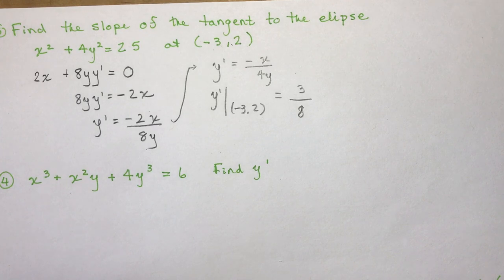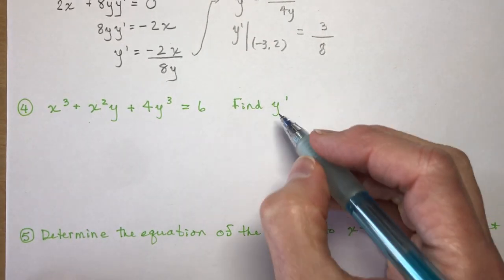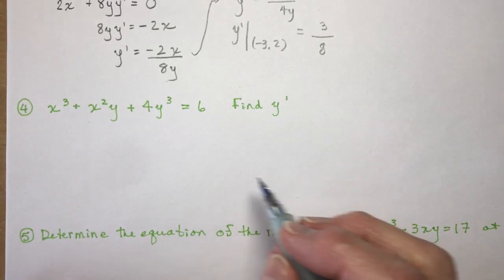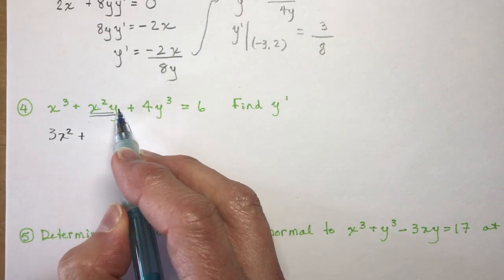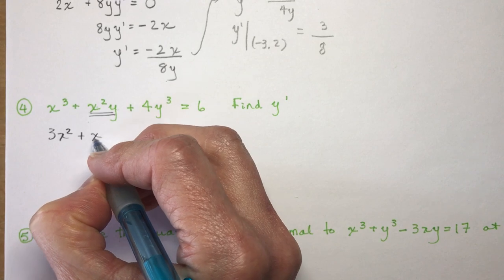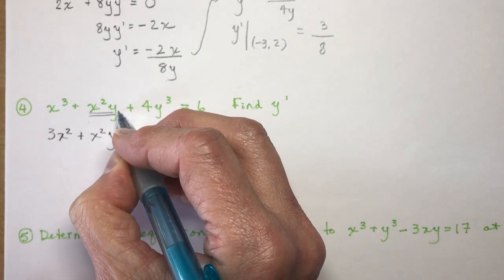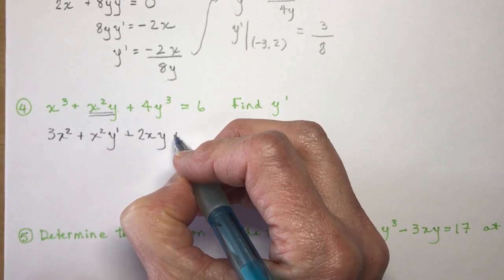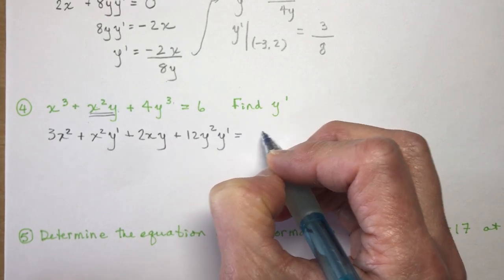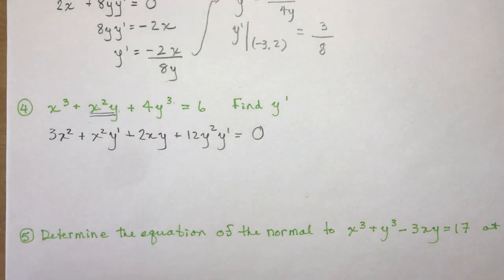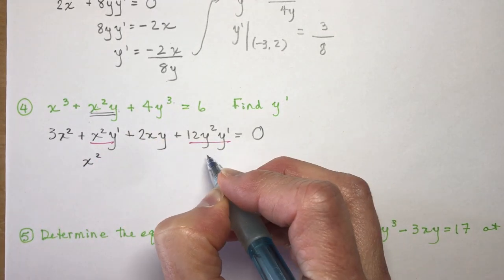Now a slightly more complex one — find y′, not the slope at a specific point, just the slope function. For x³ + x²y + 4y³ = 6: the derivative of x³ is 3x², and x²y is a product — first times derivative of second gives x²·y′, plus second times derivative of first gives 2x·y. The derivative of 4y³ is 12y²·y′, and the derivative of 6 is 0.